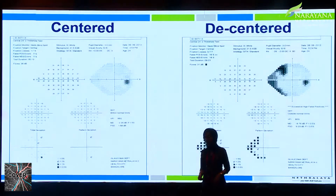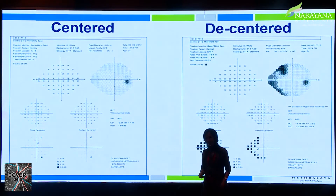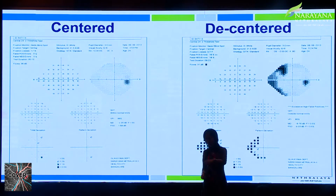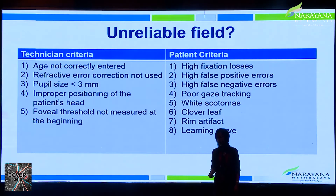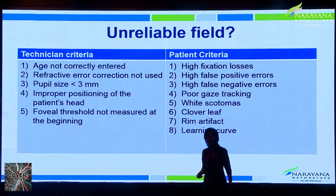There are also logistical issues, such as keeping the lens centered — especially when a patient has astigmatism or a cylindrical power. A demonstration with a technician who had cylindrical power showed that a centered trial lens versus a decentered lens produces very different field results. There are multiple criteria to check for reliability before proceeding to interpret the field.